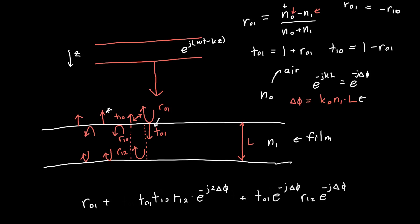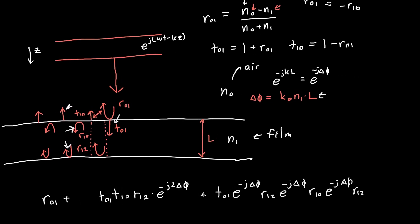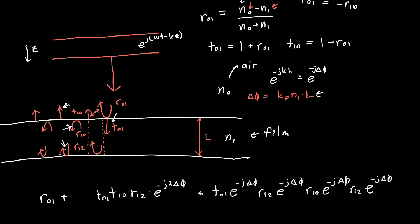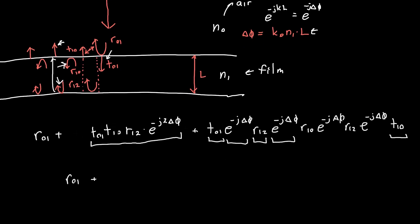Fortunately this isn't as complicated as it looks, because there are common factors between the second and third wave terms. We can factor out t01, t10, r12, and e^(−j·2·delta_phi), leaving the sum as: r01 + t01 · t10 · r12 · e^(−j·2·delta_phi) × [1 + r10·r12·e^(−j·2·delta_phi)].